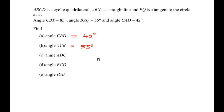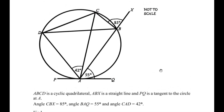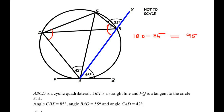Now let us find the third angle, ADC. We need to find this entire angle. To do this, let us consider the straight line ABX. This straight line is divided into two angles by line BC: one part is 85 degrees. In a straight line the total angle is 180 degrees, so the remaining angle is 180 minus 85, which gives us 95 degrees. So the interior angle at B is 95 degrees.